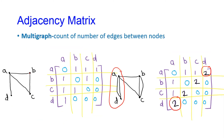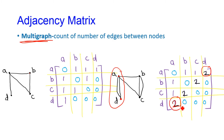What if you want to draw the adjacency matrix for a multigraph? A multigraph is a kind of graph where we have parallel edges between two vertices. Here, instead of writing 1, we write how many parallel edges we are having between those vertices. For example, if I am having two parallel edges between vertices D and A, I will write 2 for the D to A and A to D entries.